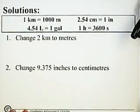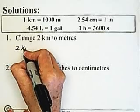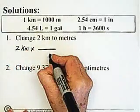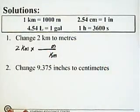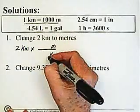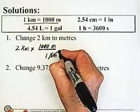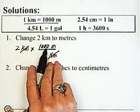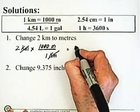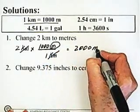Here we are changing 2 kilometers to meters. I'm going to start with 2 kilometers and multiply it by a conversion factor that has kilometers in the denominator and meters in the numerator. The relationship is 1 kilometer equals 1,000 meters. My kilometers cancel. 2 times 1,000 divided by 1 gives me 2,000, and the units I'm left with is meters, which is what I want.